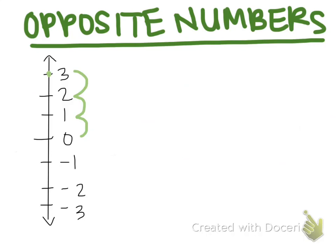To find the opposite of positive three, I'm going to start at zero, but this time I'm going to move in the opposite direction. Because our number line is vertical and I moved up last time, this time I'm going to move down.